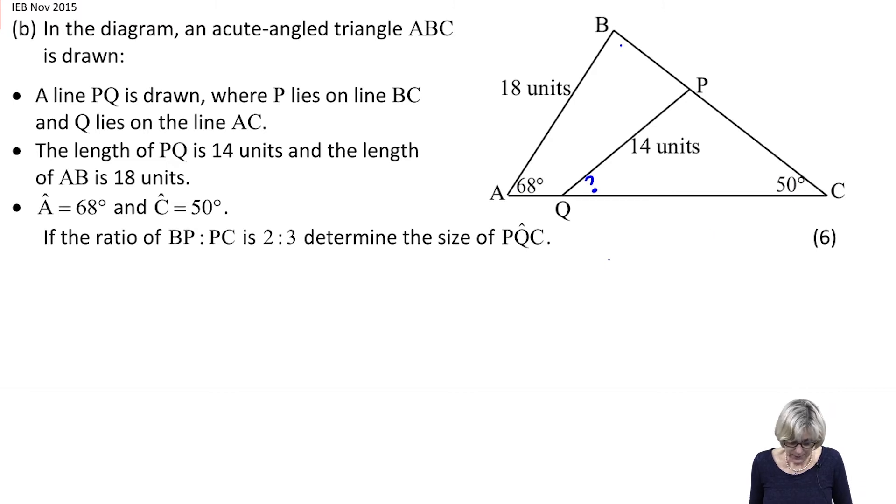They're telling us the ratio of BP to PC is 2 to 3. So I'm going to write 2k and 3k. I will not put 2 and 3 because those aren't the actual lengths. You can use any variable you want.